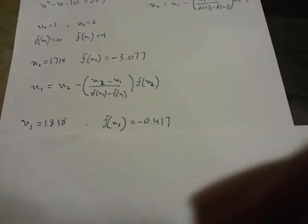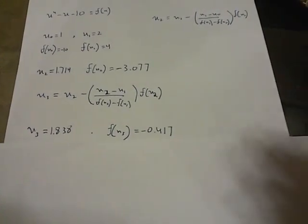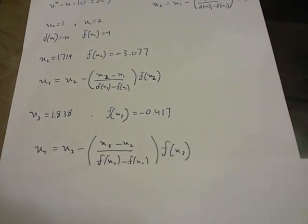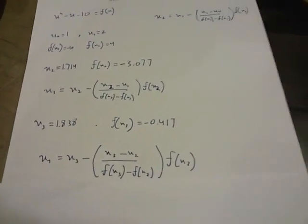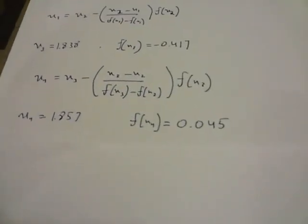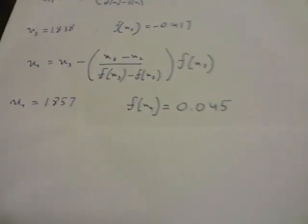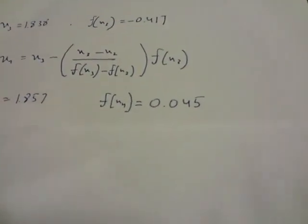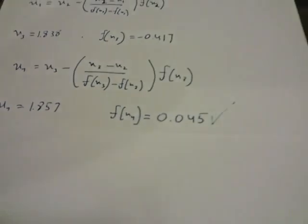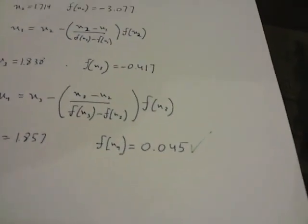Similarly we're supposed to find x4 now, so we use that modified version of that formula again. We find x4 to be 1.857 and f of x4 to be 0.045, which is our answer. So this is the third iteration, the one at which we stop.